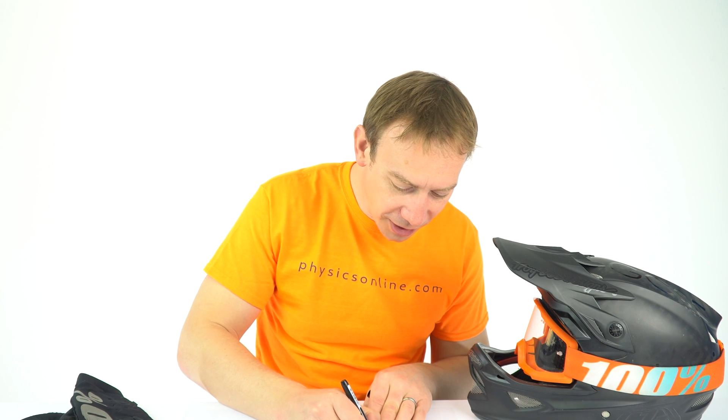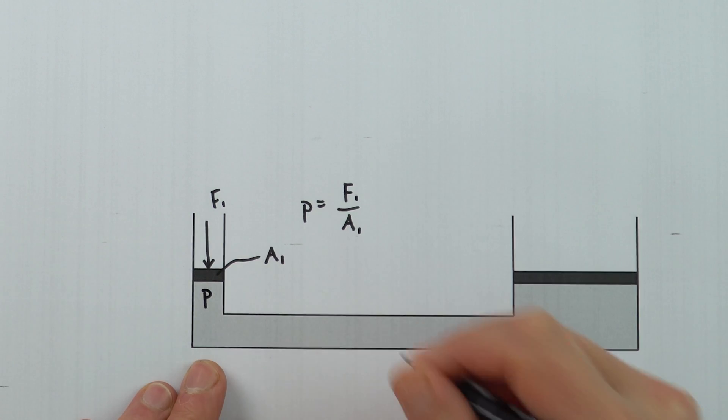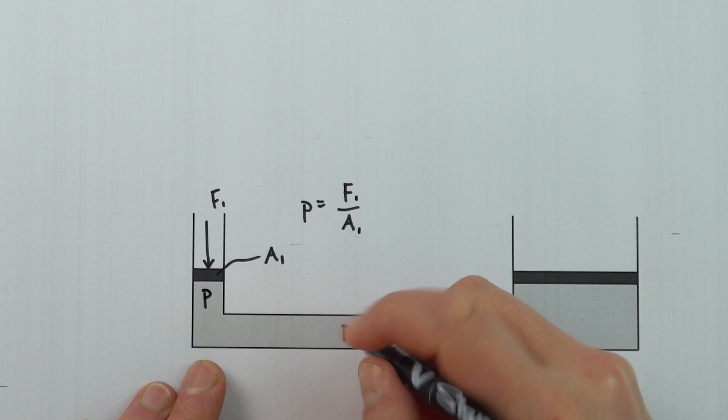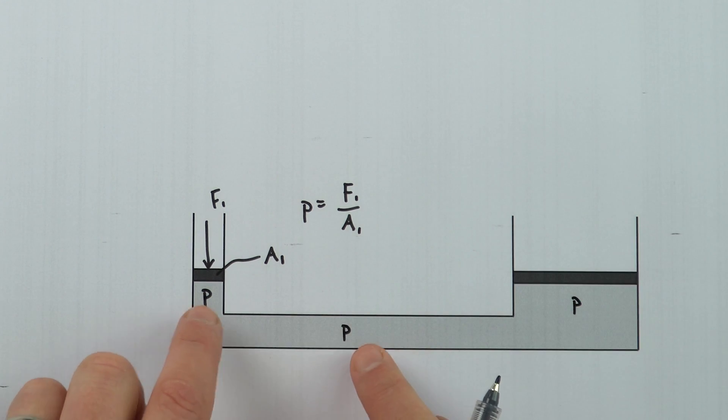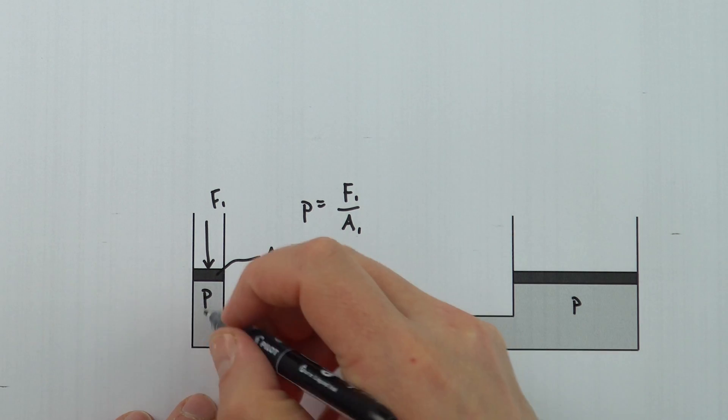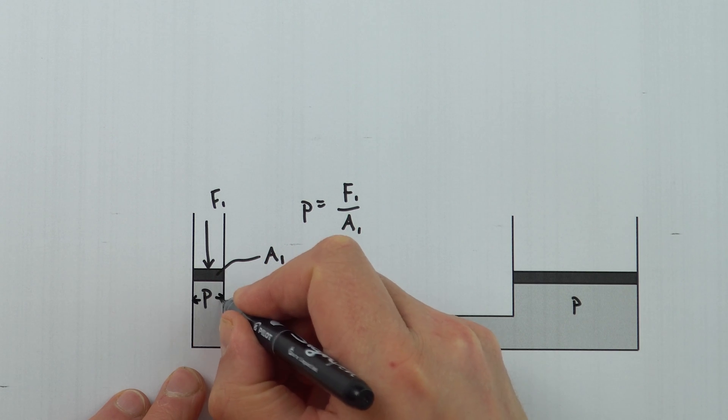When you pressurize a liquid it experiences a certain pressure P here and it experiences that same pressure everywhere in that liquid. No matter where we are, all parts of this liquid are going to experience the same pressure. I'm just going to show that with some small arrows pointing outwards.